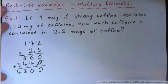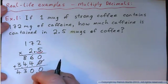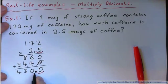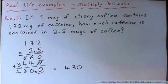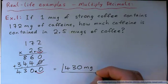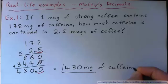What should we do with the decimal point? We have one decimal place in the question. So we need 1 in the answer. So 430.0, which of course is equal to 430. What units should we use on the answer though? The question is, how much caffeine is contained in 2.5 mugs of coffee? 430 milligrams, right? Milligrams of caffeine is the answer.